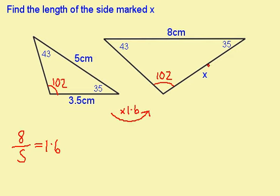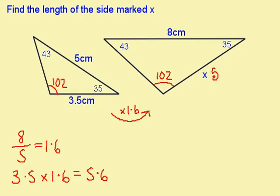I now want to find this side. This side is corresponding, so I'm going to do 3.5 times 1.6, which gives me 5.6. So I know that this side is 5.6 cm long.